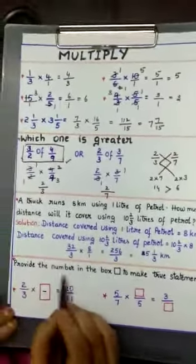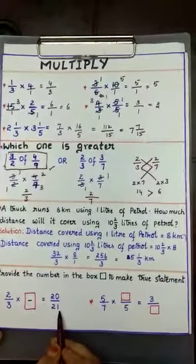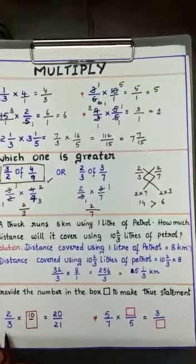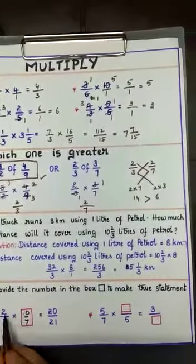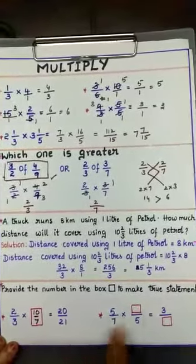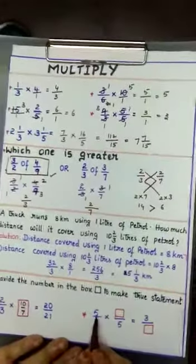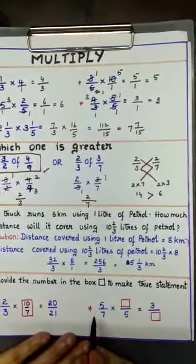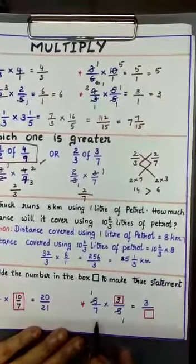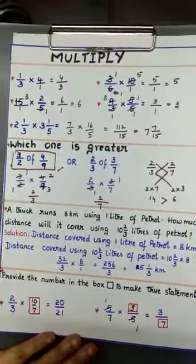Now provide the number in the box to make a true statement. First: 2/3 into box equals 20/21. To get 20, multiply 2 by 10. To get 21, multiply 3 by 7. So the required fraction is 10/7. Second: 5 into something equals 3. Simplify: 5 ones and 5 ones; then 1 times 3 is 3, and 7 ones are 7. The statement is made true with 3/7.